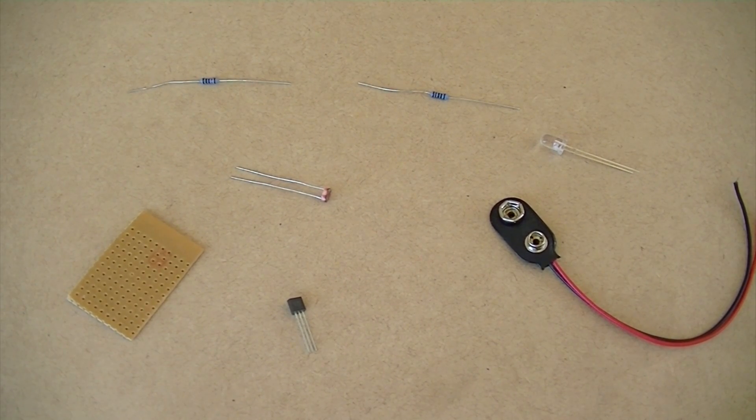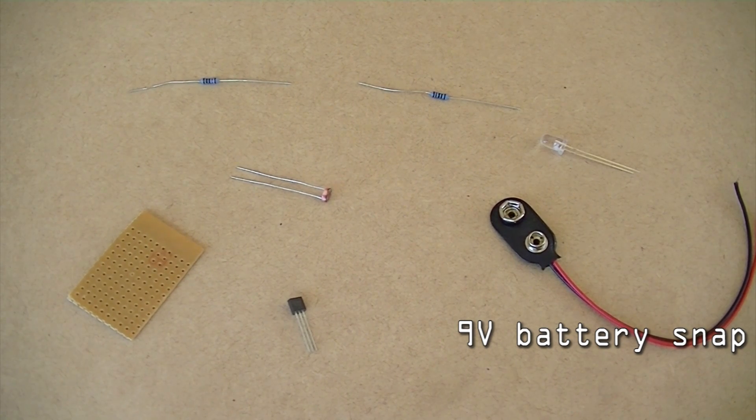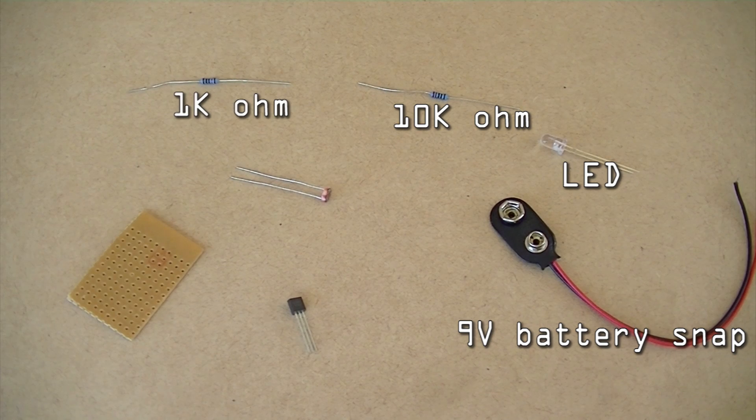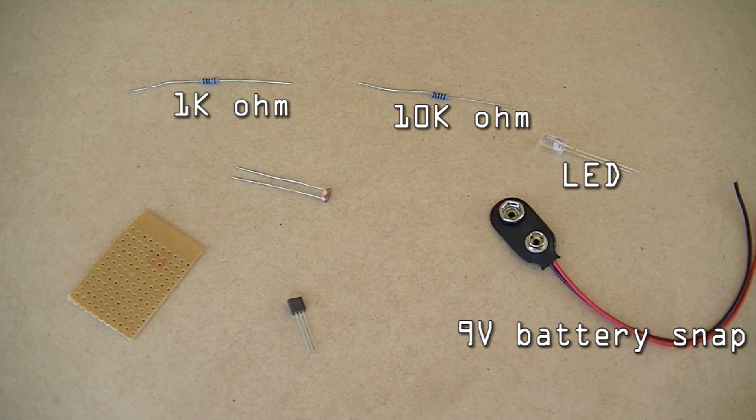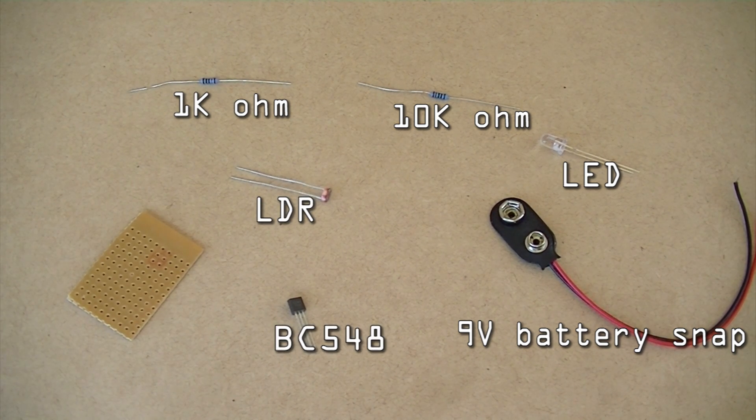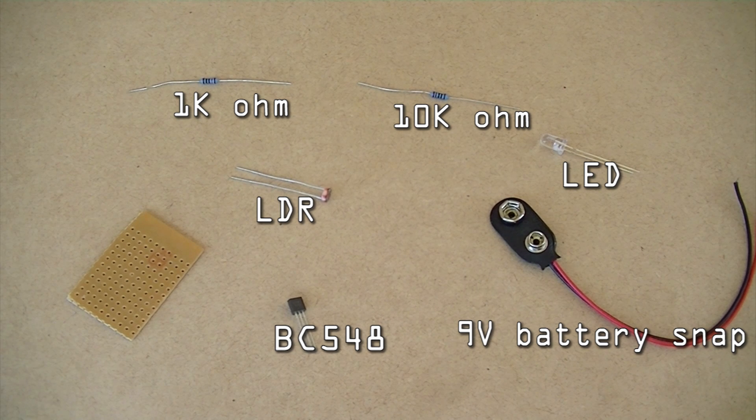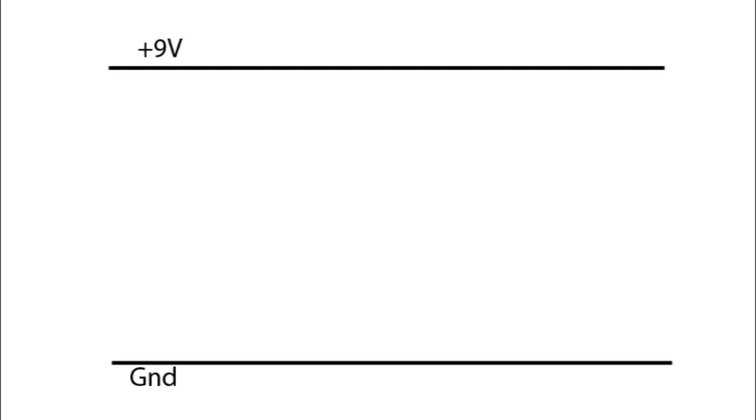Okay, so here are the components that we're needing for this project: a 9 volt battery snap, an LED, a 10k ohm resistor, a 1k ohm resistor, an LDR, a BC548 transistor, and a piece of Vero board along with a 9 volt battery.